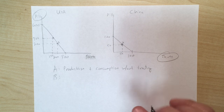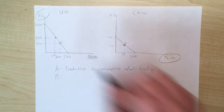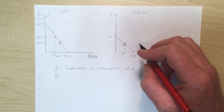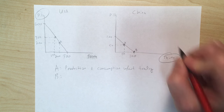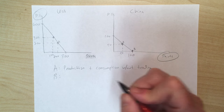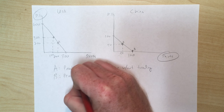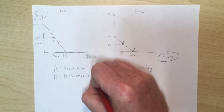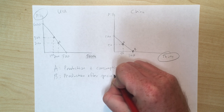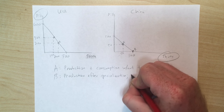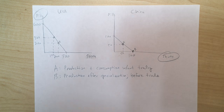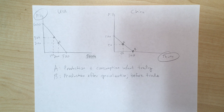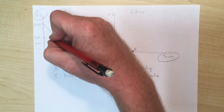China's economy in this example is relatively small. So maybe China perfectly specializes and produces only shirts. Point B is the production after specialization, before doing any trading.